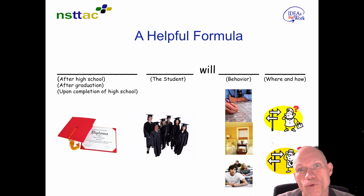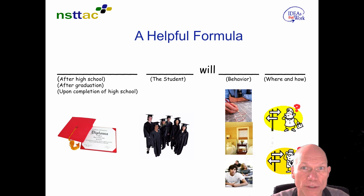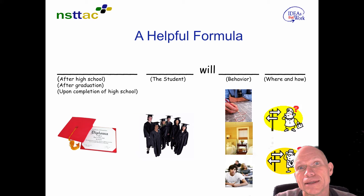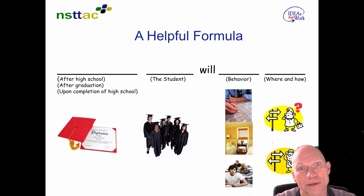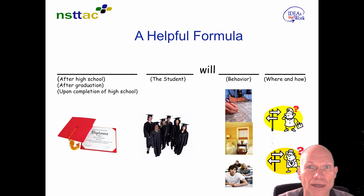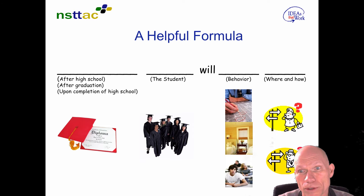Here's a great format for writing good transition goals. It should start with 'after high school,' 'after graduation,' or 'upon completion of high school' — that keeps in mind we're writing goals for what a student will do after they leave school, not while still in school. Then include the student's name, what they will do, the behavior, and how or where they will do it.